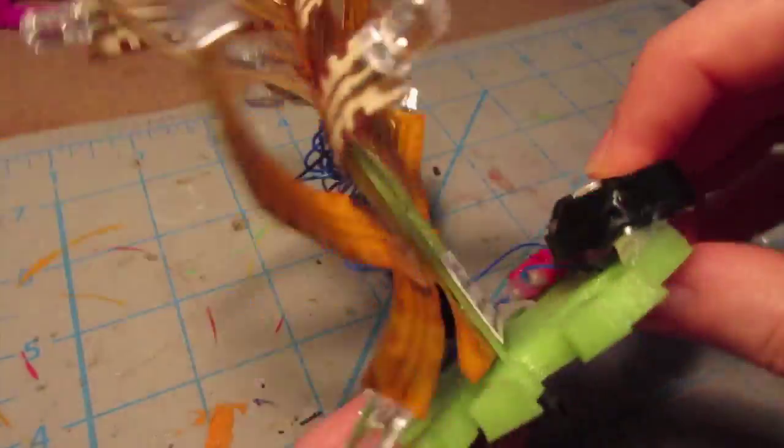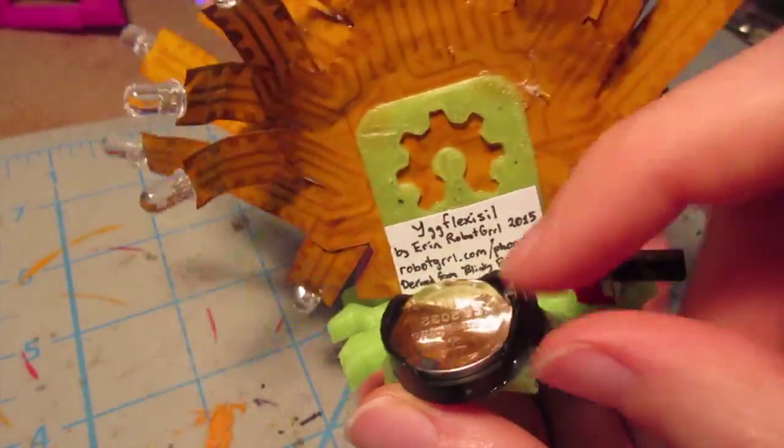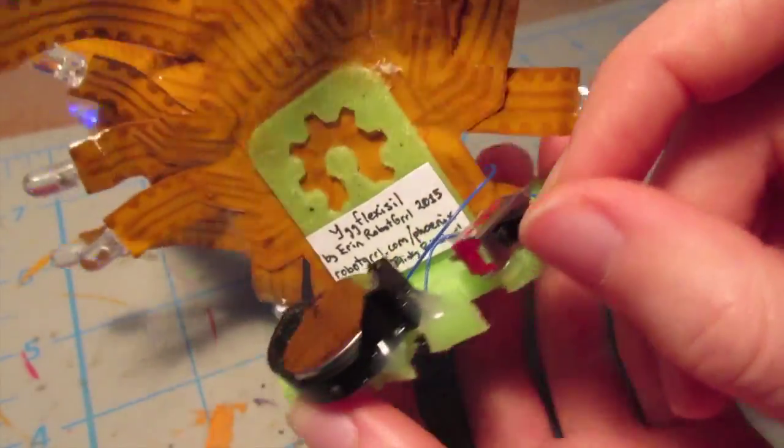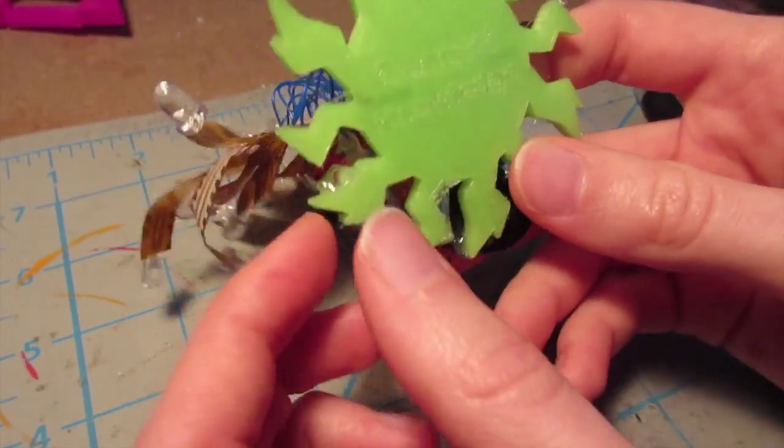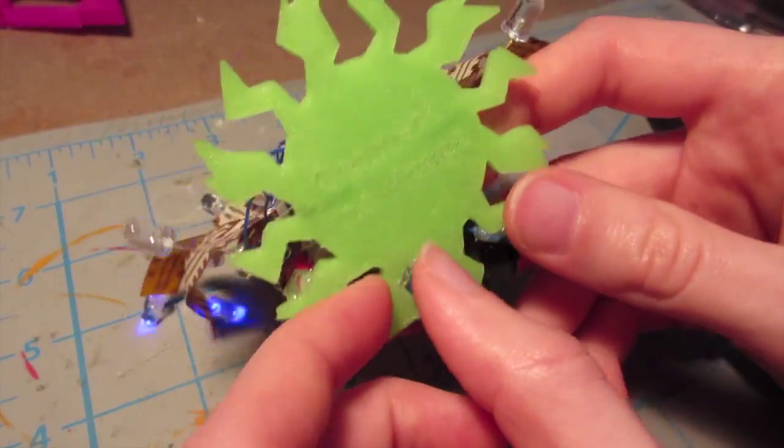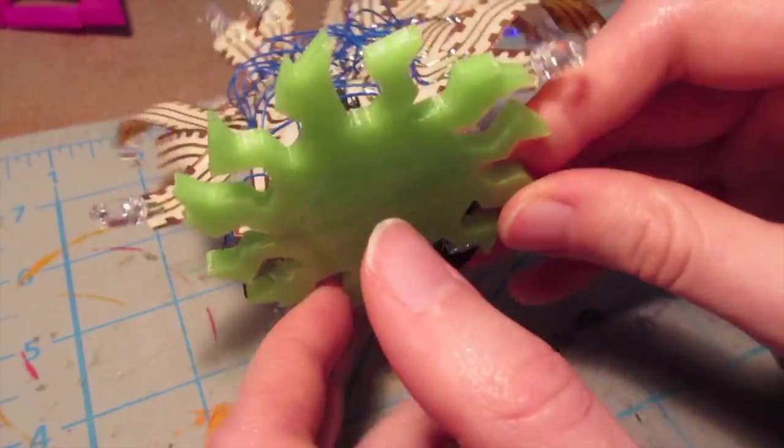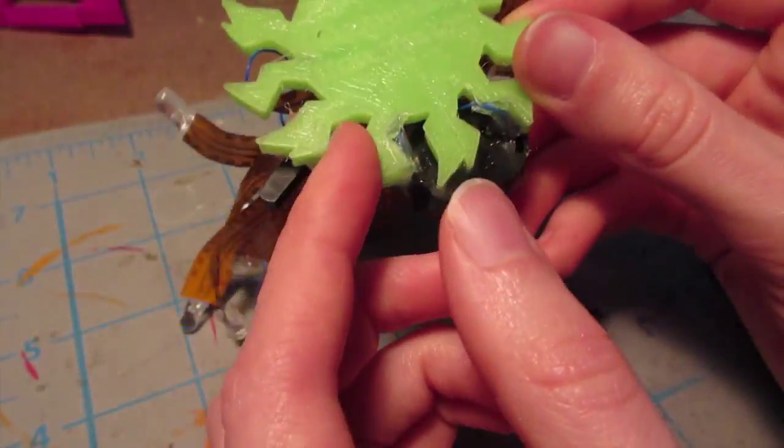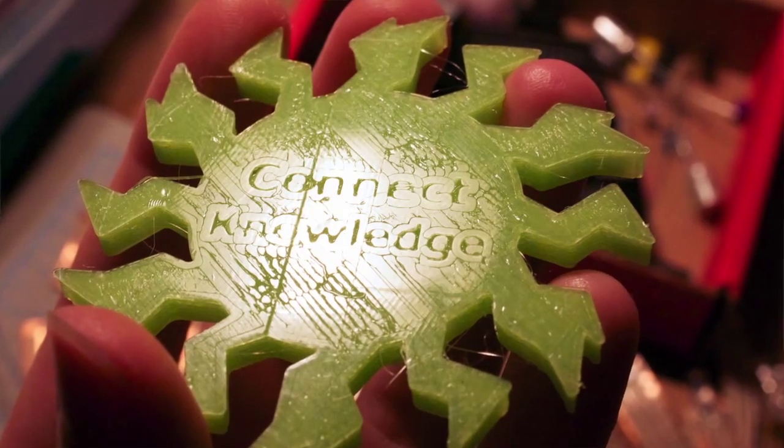It's powered using a coin cell battery and there's a little switch on here. The base is 3D printed with PLA filament, supposed to look like roots. On the bottom it says 'connect knowledge.' Kind of cheesy, whatever.